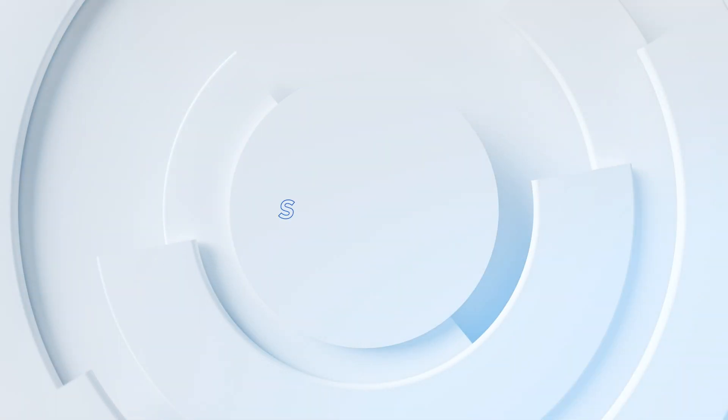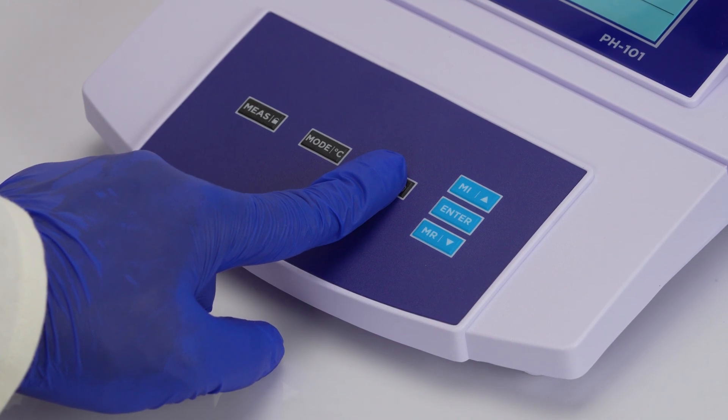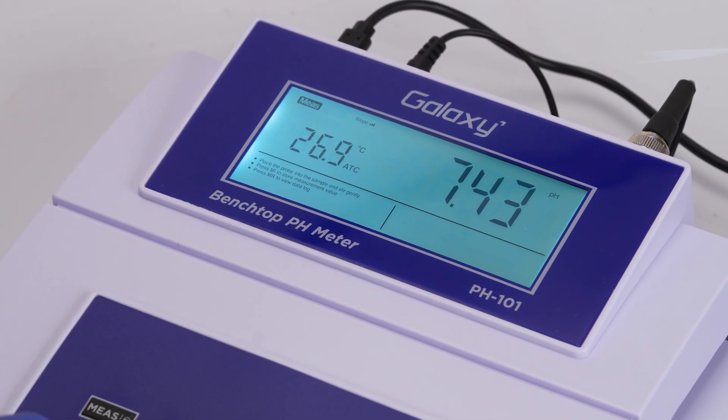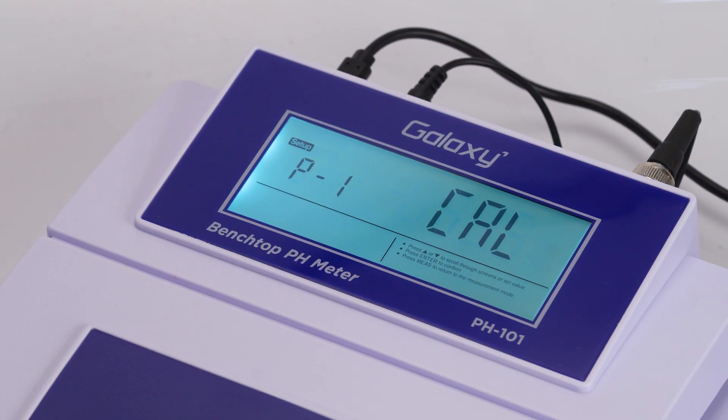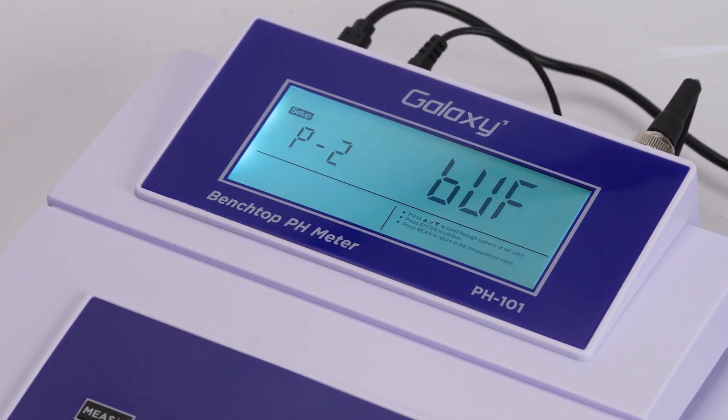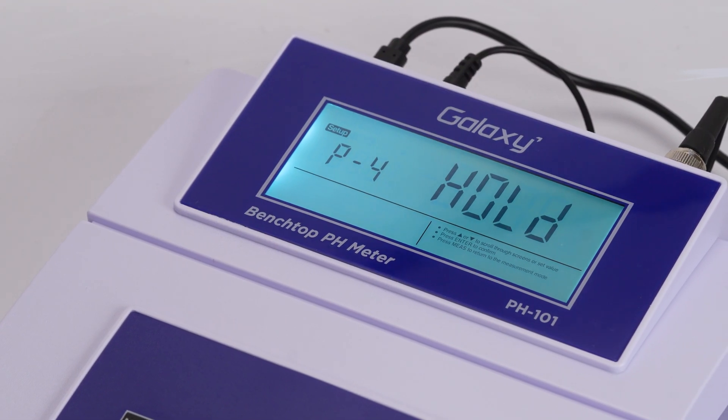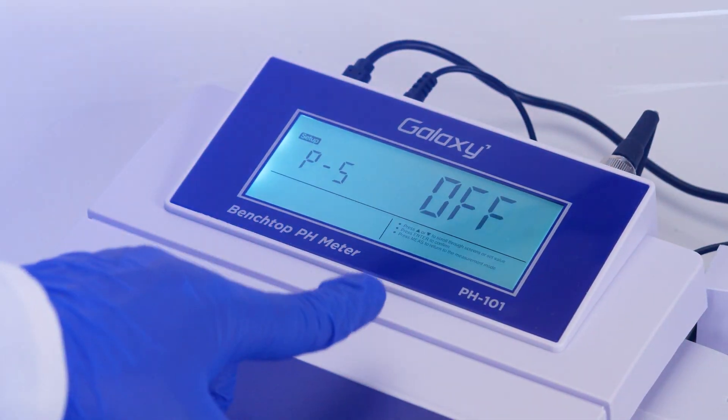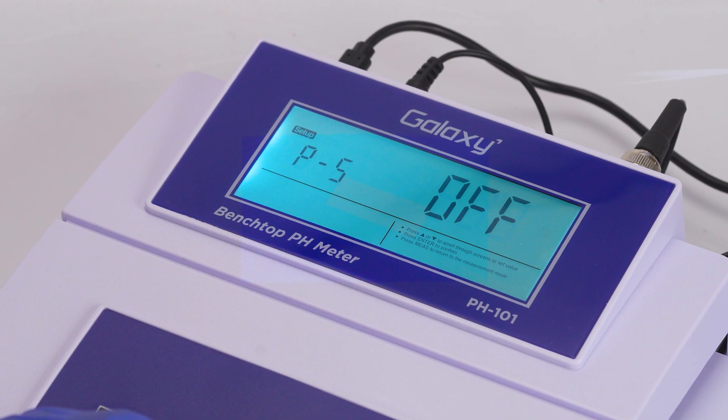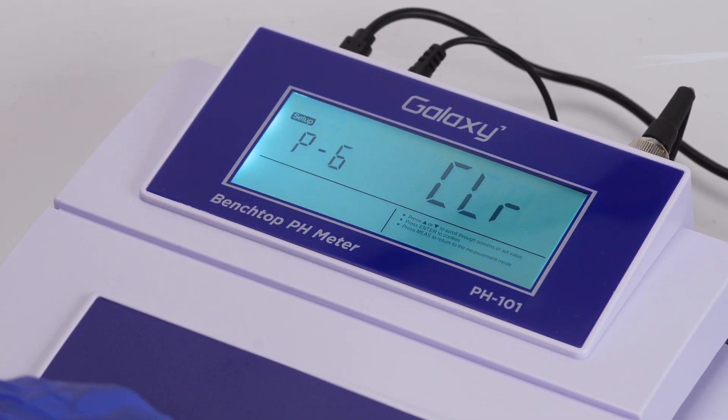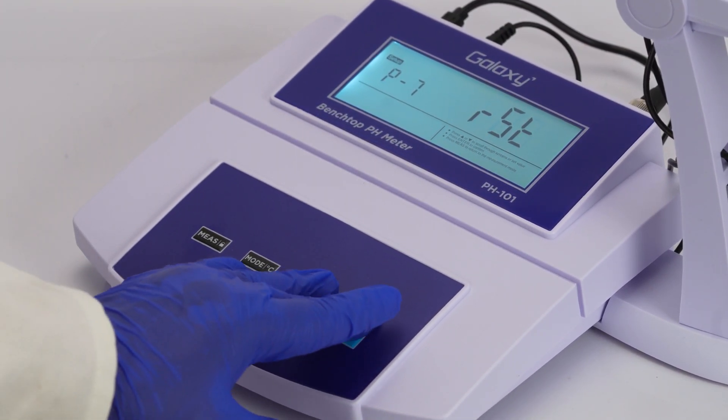To access the setup menu, press and hold the cal key. From there you can choose cal to configure calibration points, buff to set the pH buffer group for calibration and auto recognition, unit to select the measurement unit, hold for automatic endpoint locking, off to enable power saving mode that switches off the device after 30 minutes of inactivity, and CLR to delete all data logs factory reset. Once you've made your selections, press enter to save them.